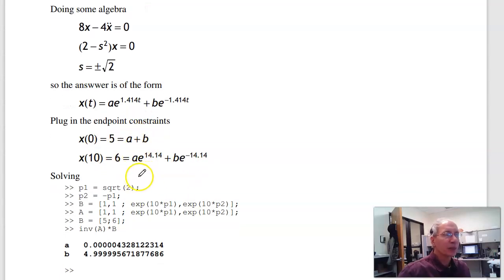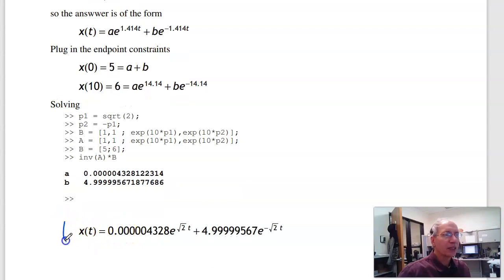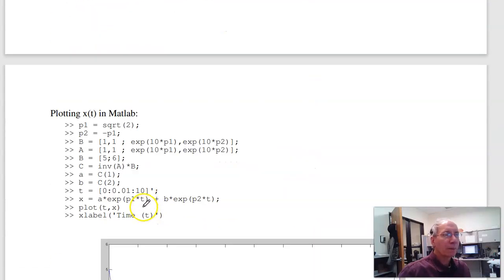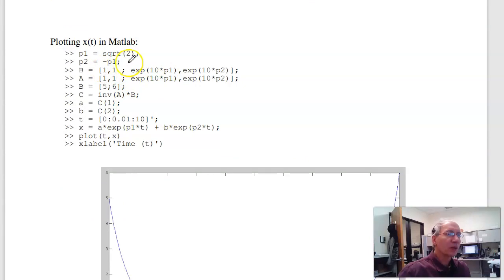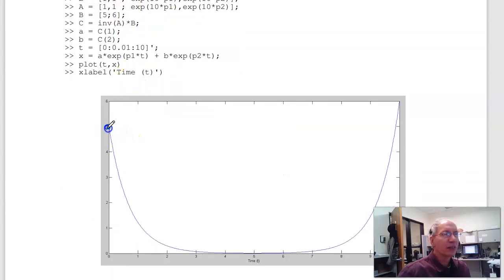In MATLAB, I'm solving that using matrices. And I get a is 0.00004, b is 4.99995. There's my answer. And if you want to plot it, using MATLAB so I get more decimal places, I start out at 5, come down, then go back to 6. That's the optimal path given that cost function.